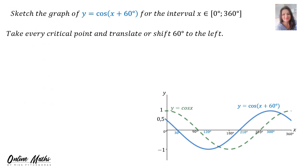Let's look at the cos graph. Sketch the graph of Y is equal to cos(X + 60) for the interval X is an element of 0 up to 360. If you look at the graph, the green graph is Y = cos X, that's your original cos graph. And then the blue graph is the one that's been translated: Y = cos(X + 60). We will take every critical point and shift 60 degrees to the left.